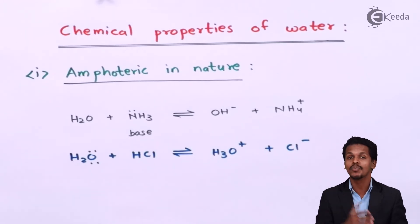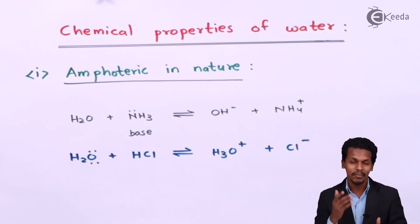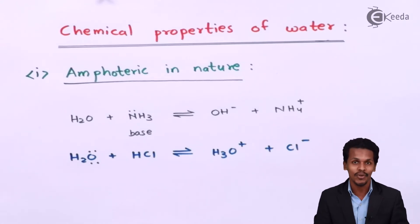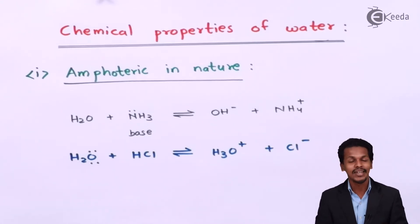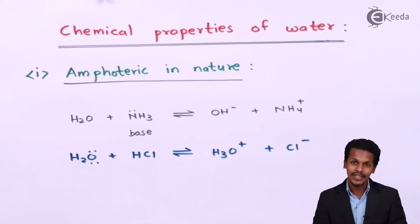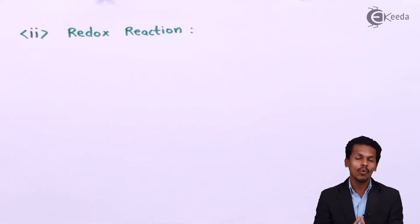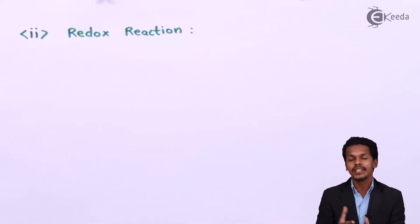So water can act like an acid and also act like a base. Because of these two properties being exhibited by the same molecule, it is called an amphoteric molecule. This is the first chemical property of water. Now let us move to the next one — water is basically a universal solvent.